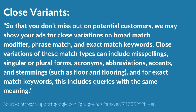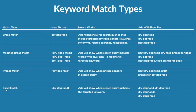Basically what close variants does is expand the search queries that your targeted keyword will match to other things like misspellings and plural forms of the word. A quick example: we're looking at an exact match keyword — dry dog food. Some of the different keywords that might match are obviously the exact match version, and then if someone misspells it as DRI dog food, Google is going to assume they meant dry dog food, so it will still match your targeted keyword. It's going to impact your modified broad match, phrase match, and exact match keywords.